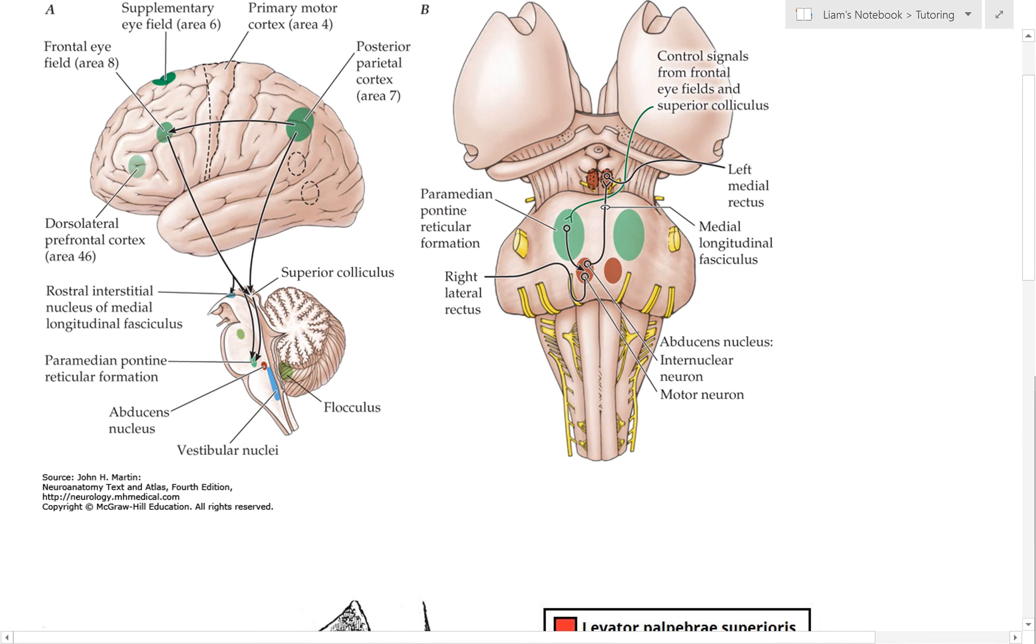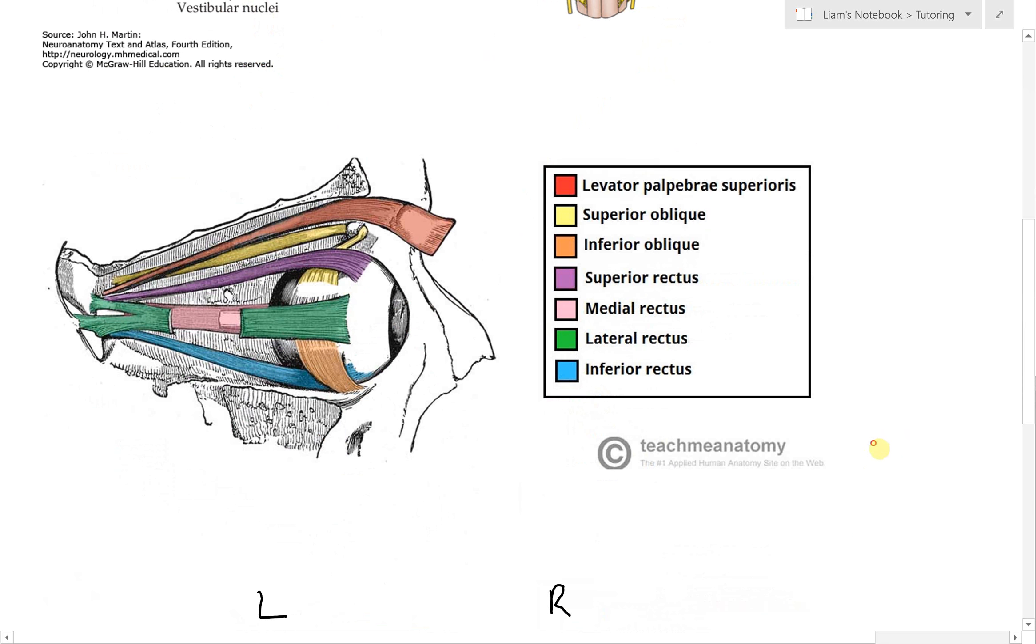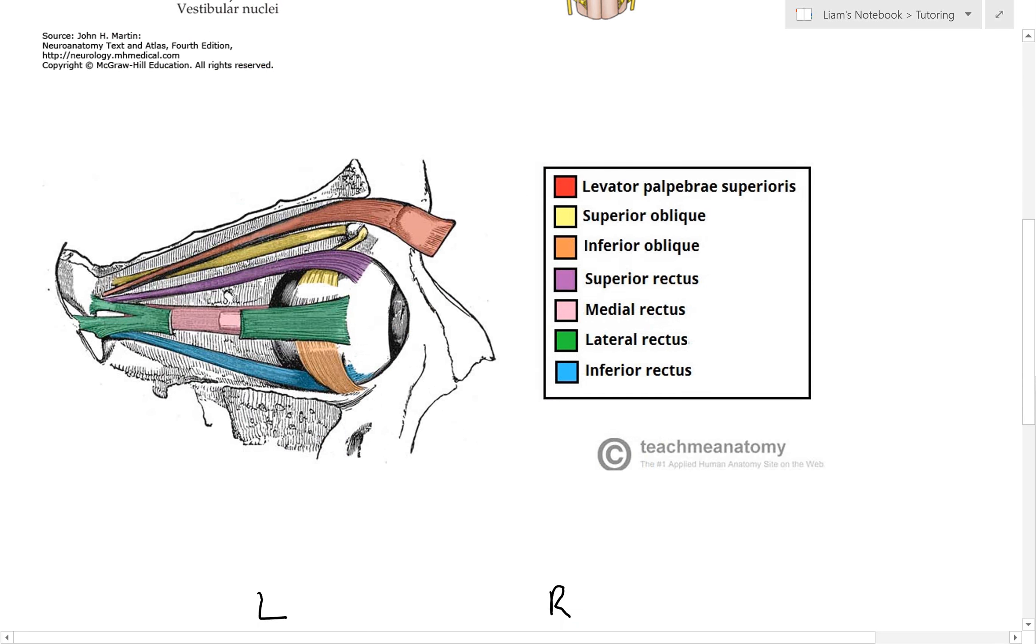Before we go into that, it's important to understand the different types of extraocular muscles. These muscles attach to the globe (the eyeball) and allow the eye to move around in the orbit. The key ones are: superior oblique, inferior oblique, superior rectus, medial rectus, lateral rectus, and inferior rectus.